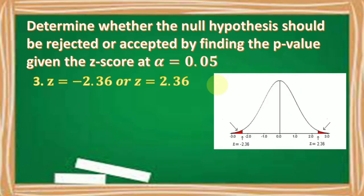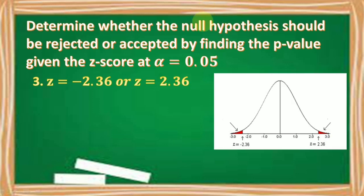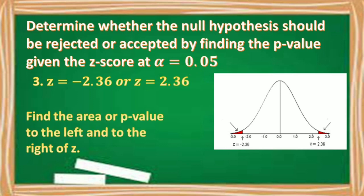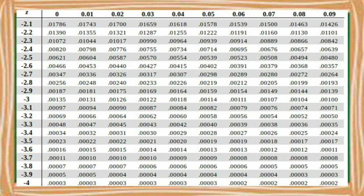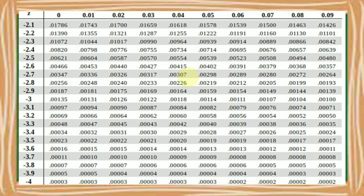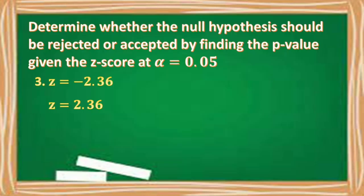Number three: Z is equal to negative 2.36 and positive 2.36, so it is a two-tailed test. To find the area or p-value under two tails, we add the area to the left and the area to the right of Z. Finding the area to the left of Z: the first two digits are negative 2.3, the third digit is 0.06, and the intersection is 0.00914. Therefore, the area of Z equal to negative 2.36 is p = 0.00914, or approximately 0.009.